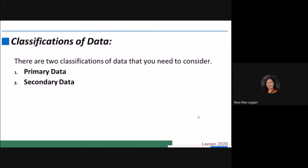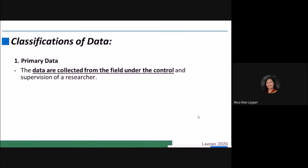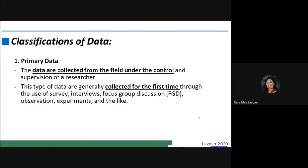There are two classifications of data that you need to consider: primary data and secondary data. When we say primary data, these are the data that are collected from the field under the control and supervision of a researcher. This type of data is generally collected for the first time through the use of surveys, interviews, focus group discussions, observations, experiments, and the like. You as a researcher are the one who collects the data for the first time — you collect it directly.